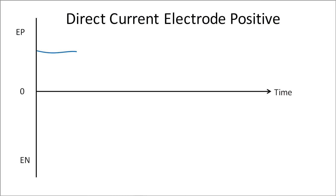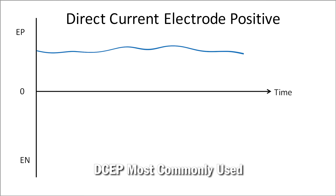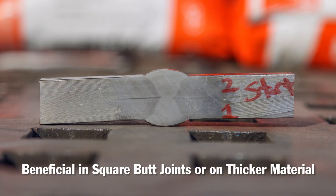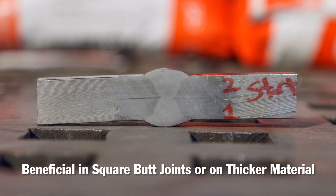DC current is a traditional waveform in a wire-fed process. The current always stays positive and never crosses zero. This is DCEP, electrode positive, or reverse polarity. Because the current never crosses zero, it is more susceptible to arc blow when compared to AC current, due to the magnetic fields of DC current, especially in a deep joint. DC electrode positive is most commonly used. It is simple and is the foundation of submerged arc welding. A DC arc provides the deepest level of penetration and is most beneficial in square butt joints or on thicker material.